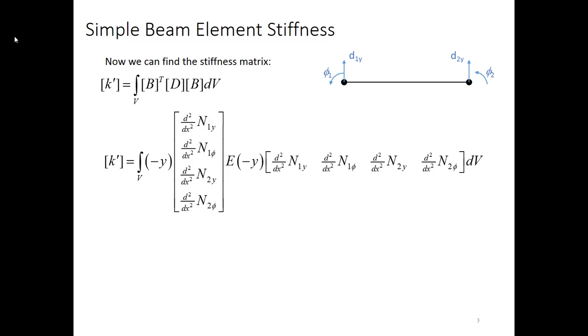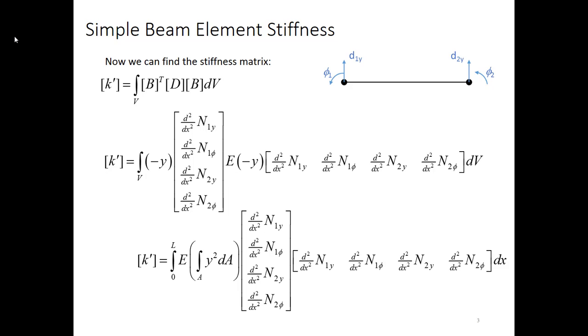So remember that B is the second derivative of each of the shape functions but it's got a minus y out front. And then as I said already the D matrix simplifies to E. Now what we can do is cluster those two y's together and then break our dV into a dA times dx and in so doing that we can take dA and move it in front of all of the shape functions because the shape functions only depend on x. They don't depend on anything inside of the cross section. They just depend on the axial position.